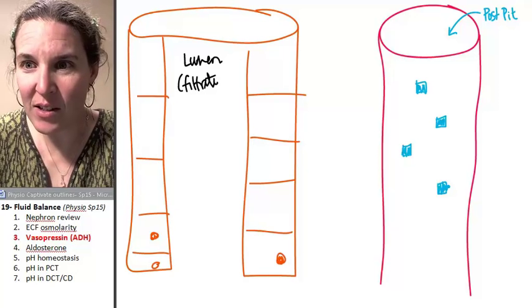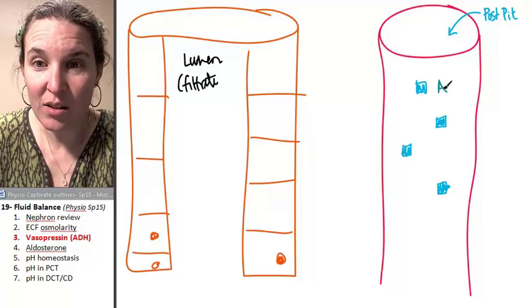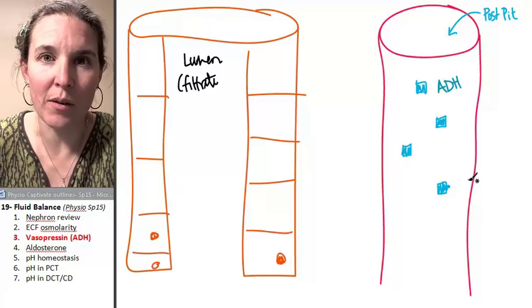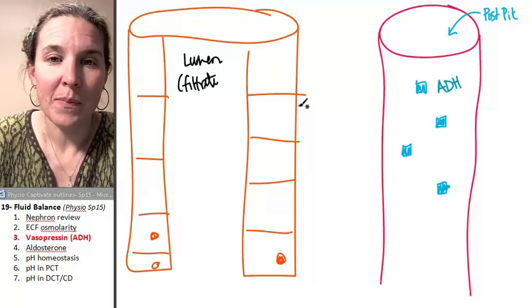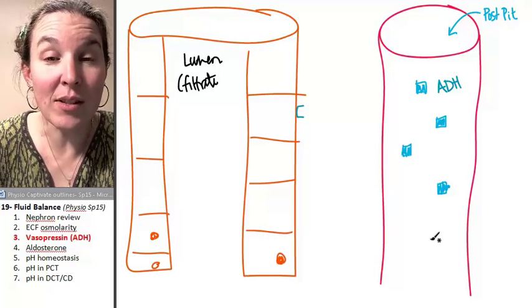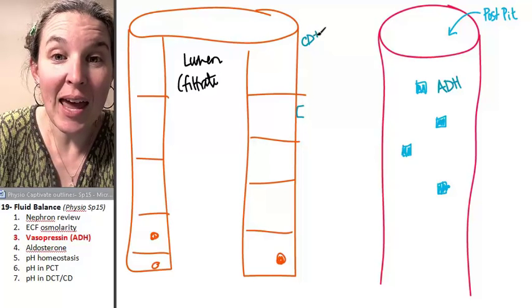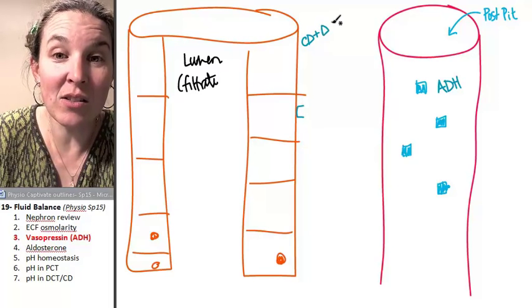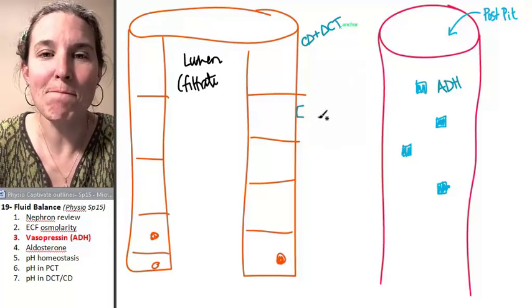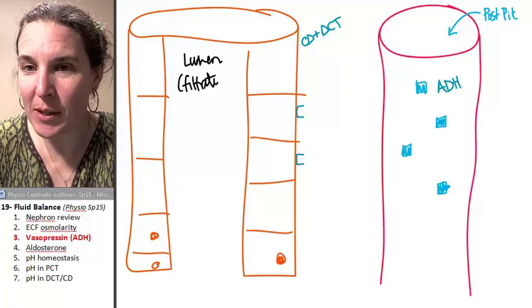And who just arrived on the scene? ADH, antidiuretic hormone. There are receptors on the outside of cells in the collecting duct and the distal convoluted tubule. Those receptors are available. Now, watch what happens.